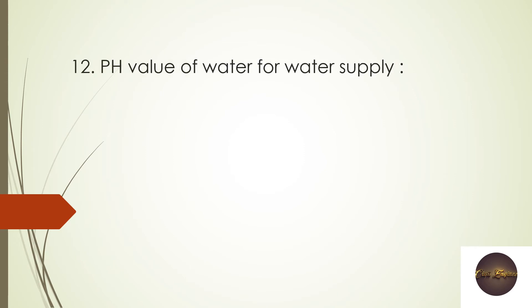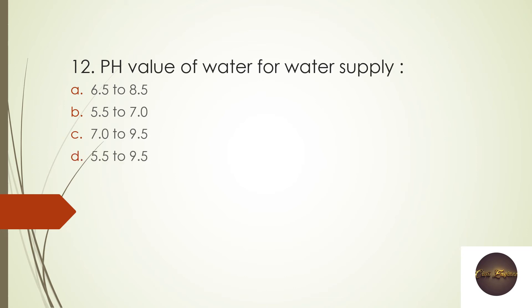Next question: What is the acceptable pH range for water supply? The pH value for neutral water is 7, and the pH for water supply needs to be within the neutral range. Options: 6.5 to 8.5, 5.5 to 7, 7 to 9.5, 5.5 to 9.5. The right answer is 6.5 to 8.5 — which is 1.5 below and 1.5 above neutral.